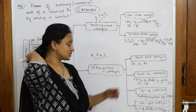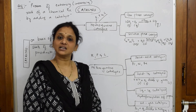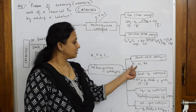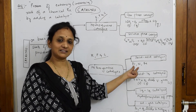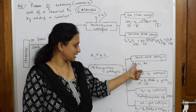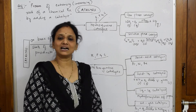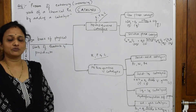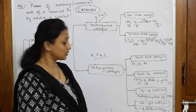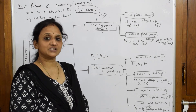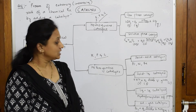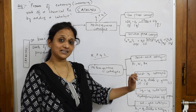Under heterogeneous catalysis, the first classification is solid-solid catalysis, where the catalyst is in the solid state. Examples include platinum, nickel, and iron. You can also refer to Haber's process, where the catalyst acts as a solid.